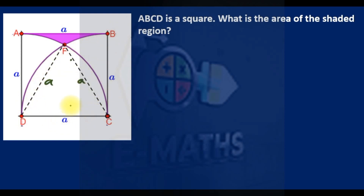So we have an equilateral triangle of side a, which means each interior angle is 60 degrees. And remember, this is a square, meaning the remaining angle is 30 degrees.